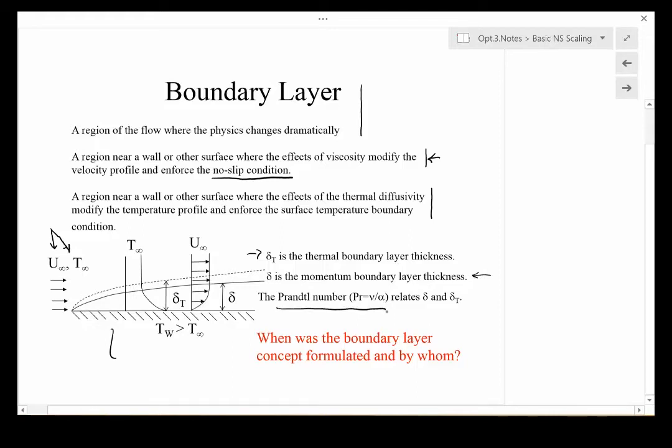We'll find that a parameter called the Prandtl number relates these. The Prandtl number is defined in terms of the kinematic viscosity—which is related to the dynamic viscosity over the density—to the thermal diffusivity. They're really both diffusivities. You might think that the kinematic viscosity is a momentum diffusivity of sorts. The Prandtl number relates these two and will show that those are related to the thicknesses of the momentum and thermal boundary layers.